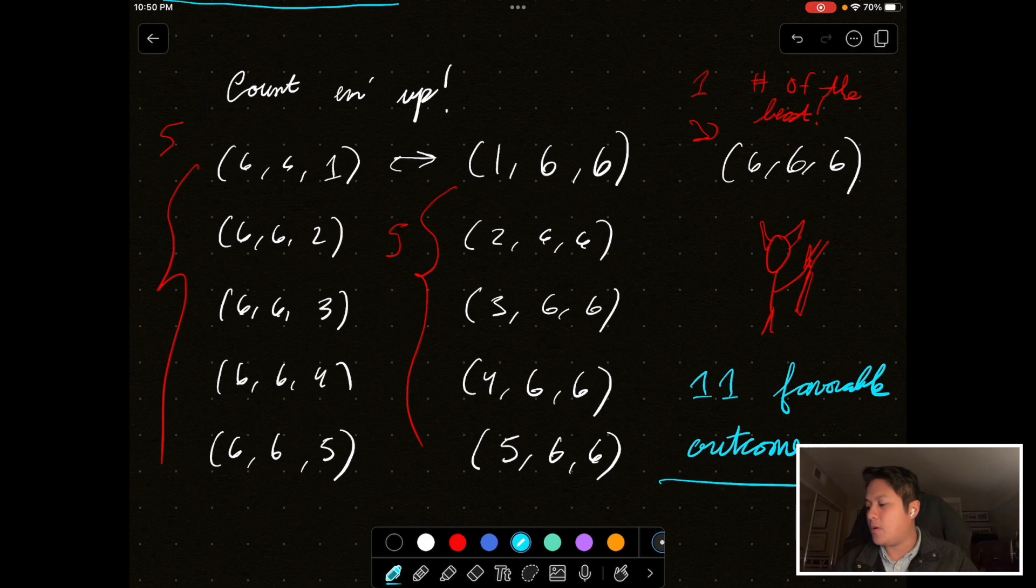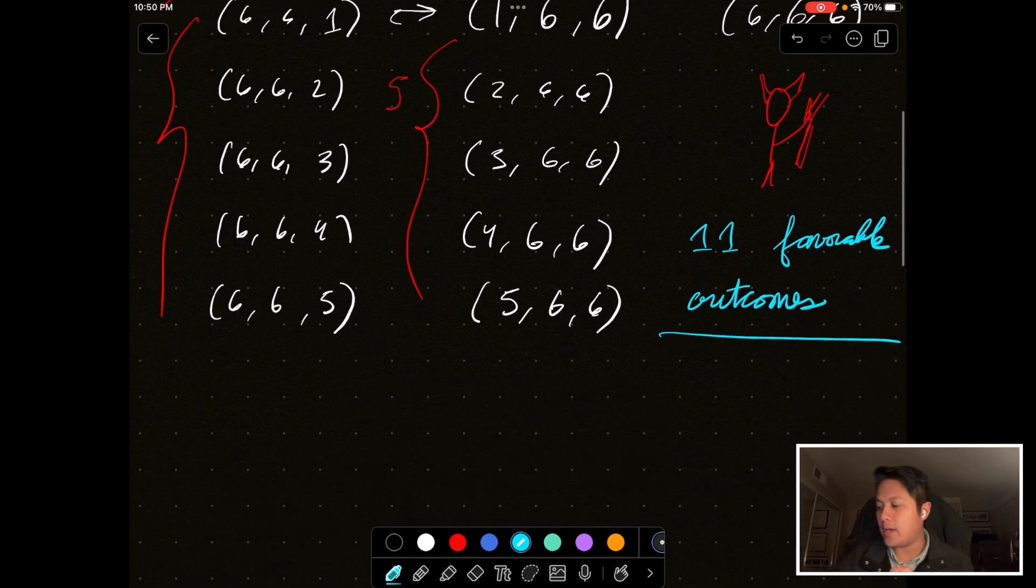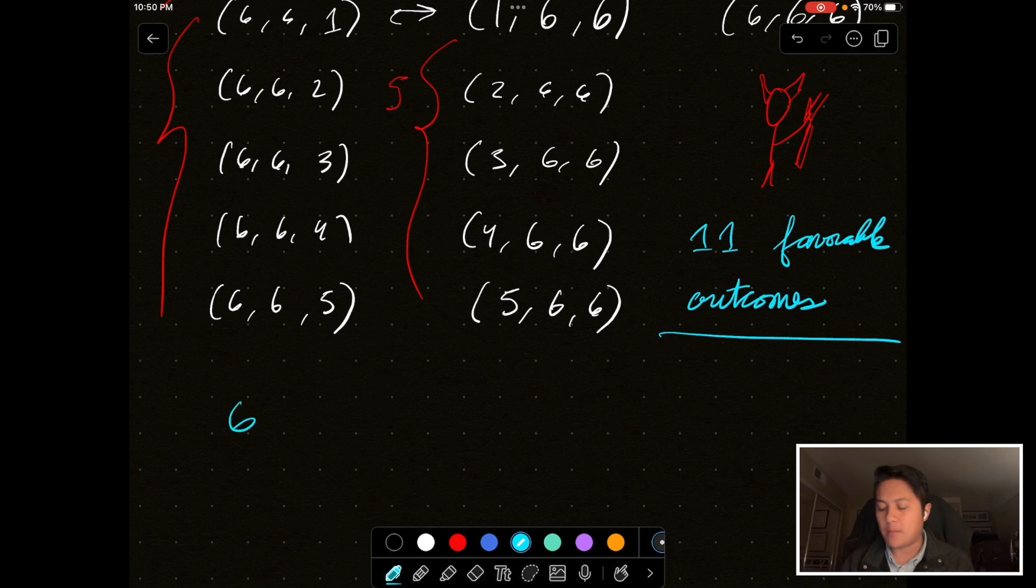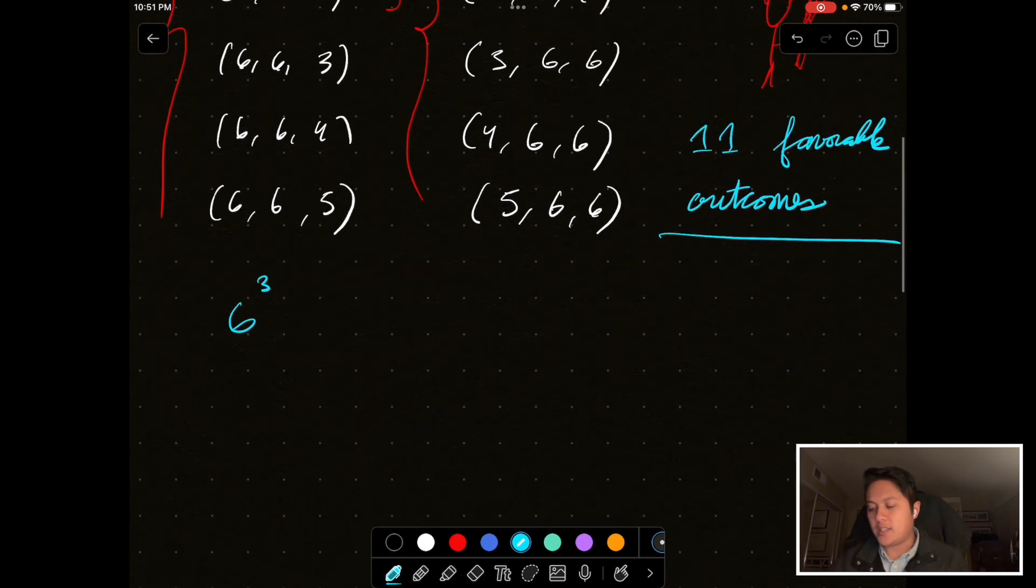And, we want to know, how many total outcomes are there? How many possible outcomes would there be? Well, if you think about it, we have six possibilities, six possibilities for the roll of a dice. And, we have three trials, right? Three trials representing the three rolls that we have here. So, this is the number of possible outcomes. This is 216.